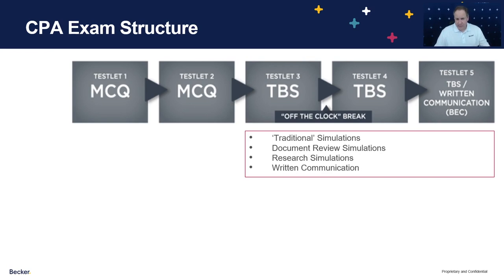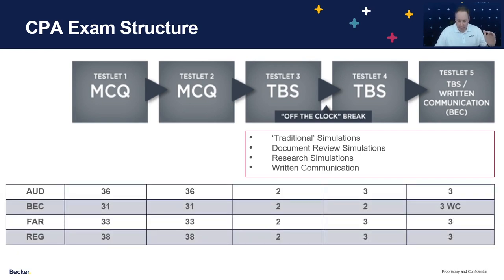Here are the details, listed alphabetically — Audit on top, then Business, then Financial, then Regulation. The number of multiple choice questions does not vary significantly; it goes between 31 on BEC to as many as 38 on Regulation. The number of total simulations also does not vary substantially — Audit, Financial, and Regulation all have eight. BEC is a little different because of the inclusion of written communication; there they give you a total of seven: four representing traditional or other types, and you won't find research in business because there is no authoritative literature for the business section. You might find a document review simulation, but the last three in testlet five will be the written communication type.